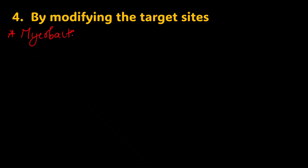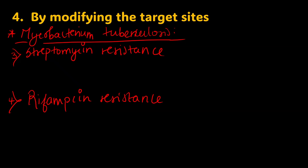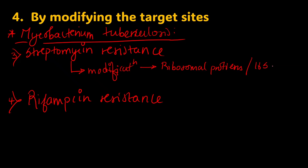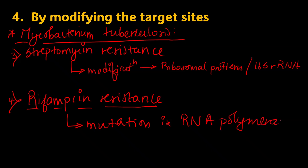The third and fourth examples involve Mycobacterium tuberculosis. Streptomycin resistance in M. tuberculosis develops due to modification in the ribosomal proteins or the 16S rRNA. Similarly, rifampicin resistance develops in M. tuberculosis due to mutation in the RNA polymerase enzyme.